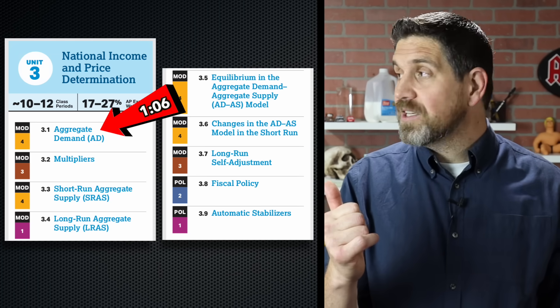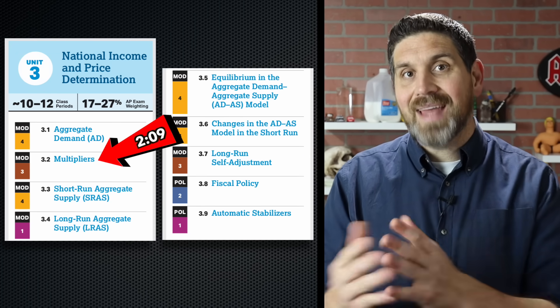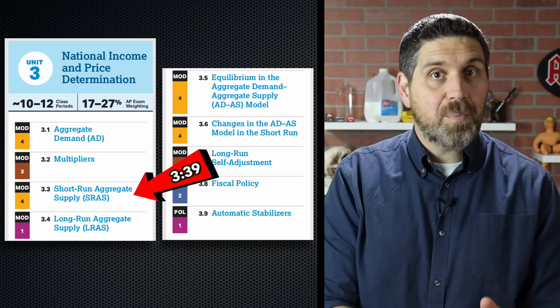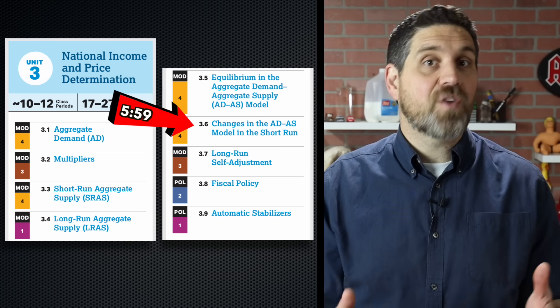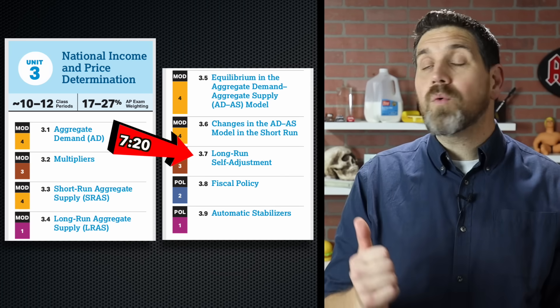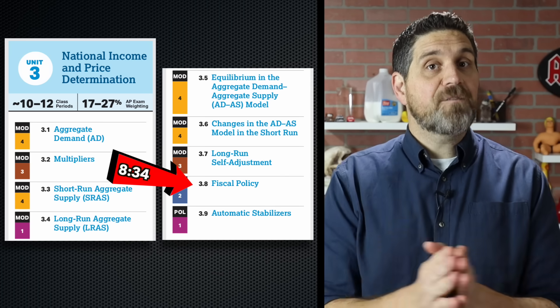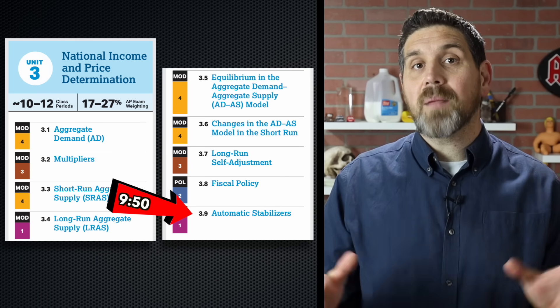We'll start off by talking about aggregate demand, then the multiplier effects and the spending and tax multiplier. Then we'll do short-run aggregate supply, long-run supply, put them together, and talk about how to shift those curves. Then we'll talk about when there's no policy and long-run self-adjustment, then fiscal policy, and end off with automatic stabilizers. Please remember the Ultimate Review Packet is sold with a per-student license, so if you're a teacher, please don't show this video to your students and use my study guides unless you have licenses, and please don't share or upload any of the study guides or practice sheets.